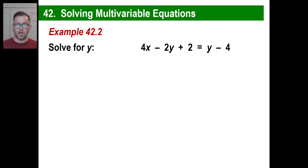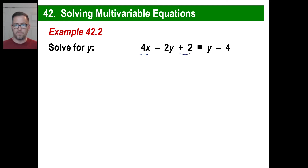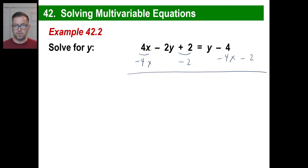Let's solve for y, which means we need to get all the y's on the left and everything else goes to the right. Well, let's get rid of the 4x and get rid of the 2 — we don't want those over there. So we subtract 4x and subtract 2. Over here, we subtract 4x and subtract 2. This is gone, this is gone. On the left side we just have a negative 2y.